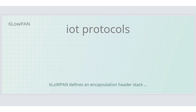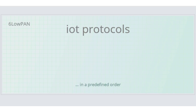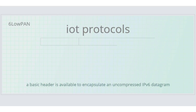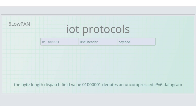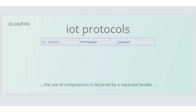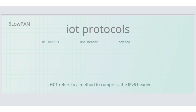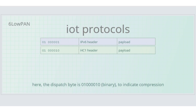6LoWPAN defines an encapsulation header stack, meaning that headers are added as needed in a predefined order. A basic header is available to encapsulate an uncompressed IPv6 datagram. In the simplest scenario, the byte-length dispatch field value 01000001 denotes an uncompressed IPv6 datagram. 6LoWPAN also provides for compression of the datagram, declared by a separate header. HC1 refers to a method to compress the IPv6 header, and in this case the dispatch byte is 01000010, which indicates compression.